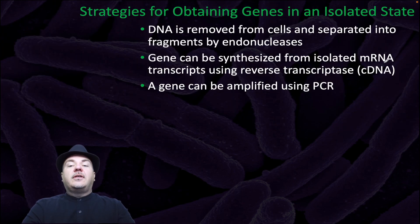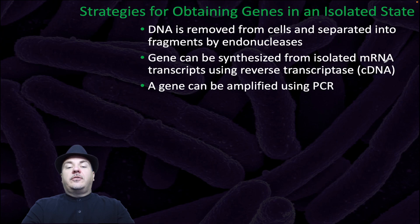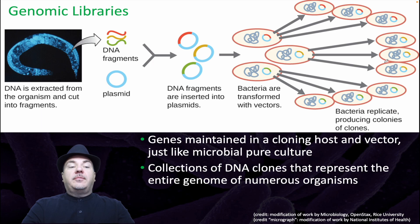So how do we obtain genes in an isolated state? DNA is removed from cells and separated into fragments by endonucleases. Genes can be synthesized from isolated mRNA transcripts using reverse transcriptase — going from mRNA to DNA is called cDNA, or complementary DNA. A gene can also be amplified using PCR. This can be used to make genomic libraries, where genes are maintained in a microbial host and vector, just like microbial pure culture. Collections of DNA clones represent the entire genome of numerous organisms.